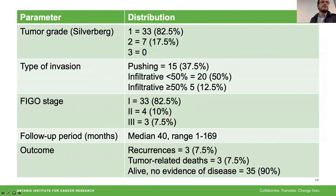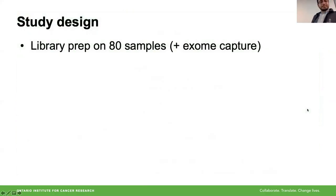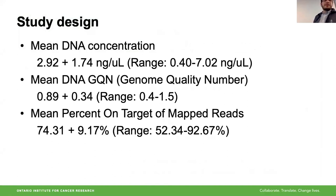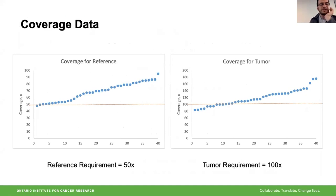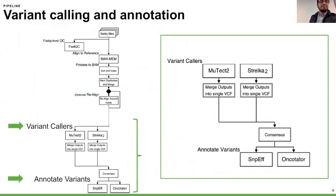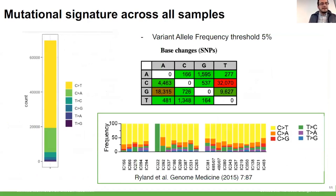The demographic distribution shows that most cases present at early stage, with most being stage one. There are different distributions in tumor grade, patterns of invasion, and follow-up. Most patients were alive with no evidence of disease at follow-up, though there are recurrences and tumor-related deaths consistent with historical distributions. We prepared libraries and achieved the target DNA concentrations. Coverage was set at 100x for tumor and 50x for matched normal tissue.